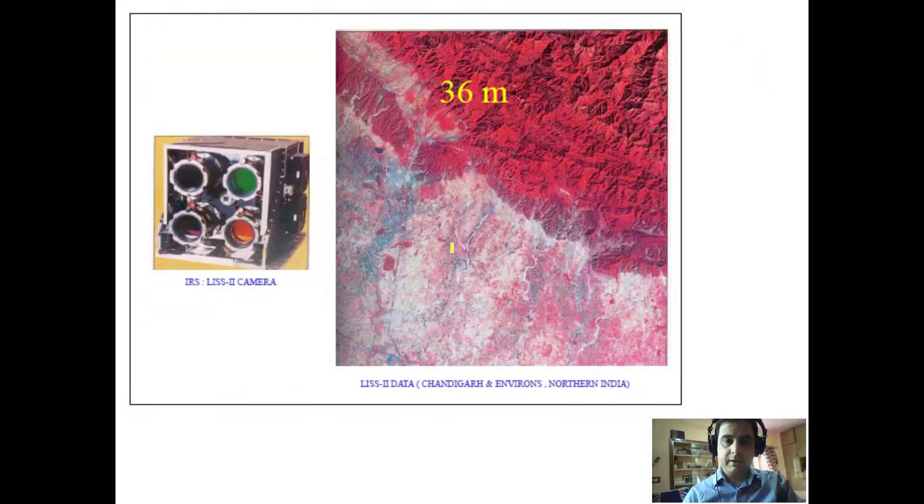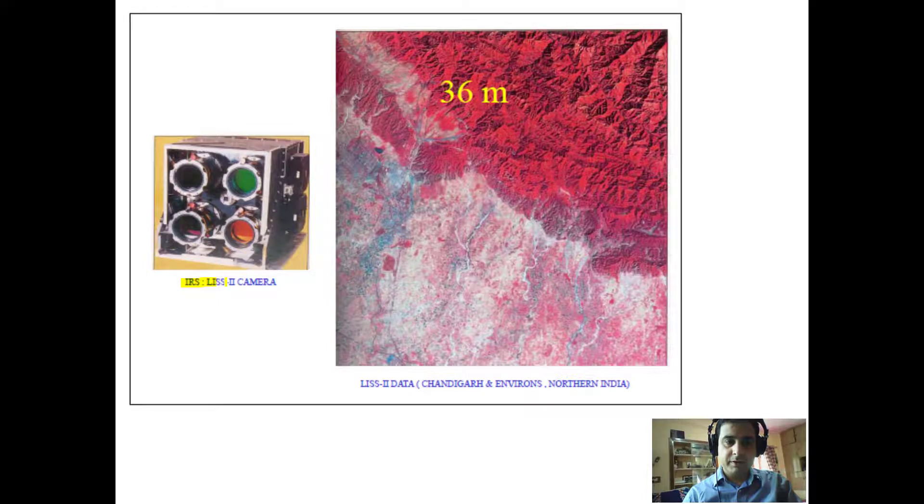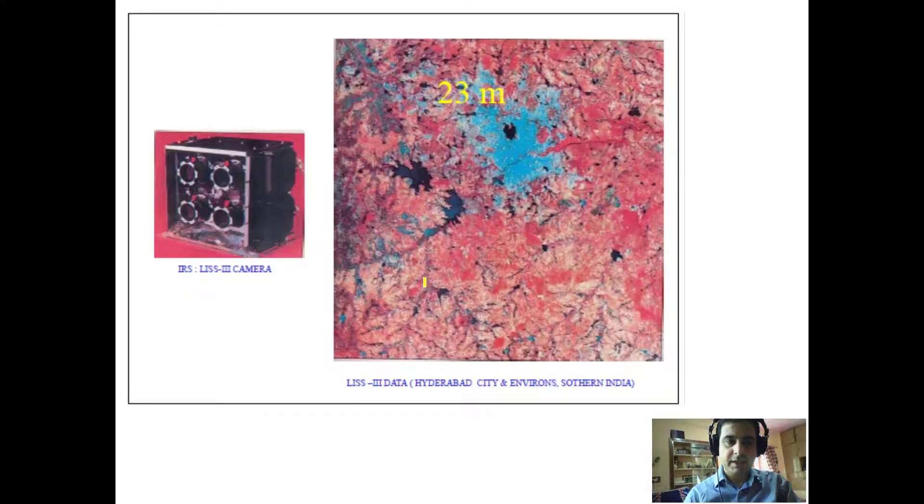So similarly using LISS 2 camera, this 36 meter resolution image has been captured and things remain same almost. And LISS 3 camera having a resolution of 23 meter, the things are getting more clear as the resolution advances.